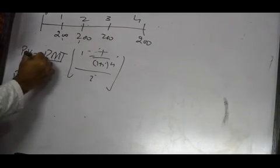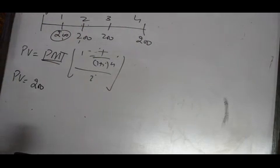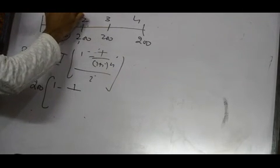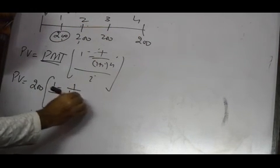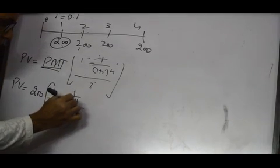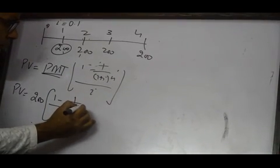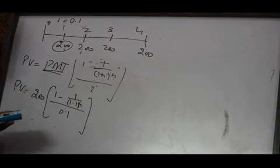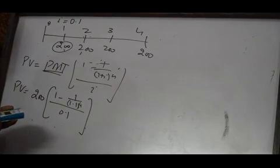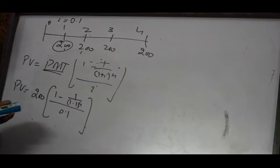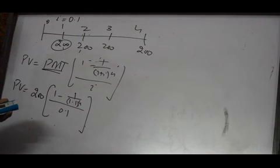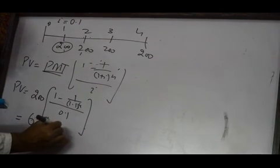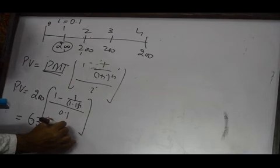In the annuity case, what we do is: PMT is 200, multiplied by 1 minus 1 over (1 plus i), where i is 0.1, divided by 0.1. And because the closing period is 4 years, n equals 4. Now we solve this: 1.1 to the power 4, 1 divided by the answer, 1 minus the answer, then divided by 0.1, multiplied by 200. So the present value of this annuity is 633.9731.